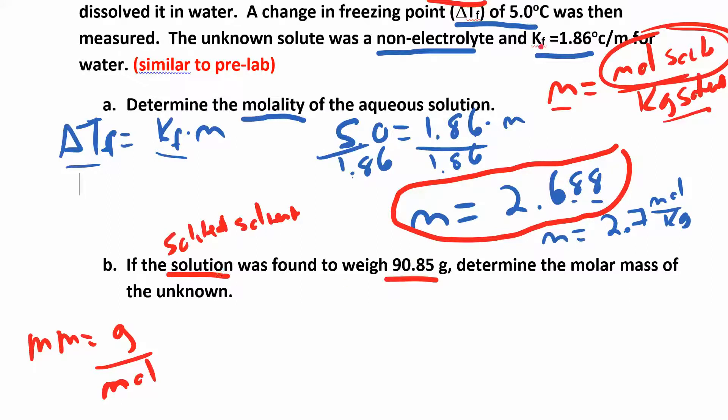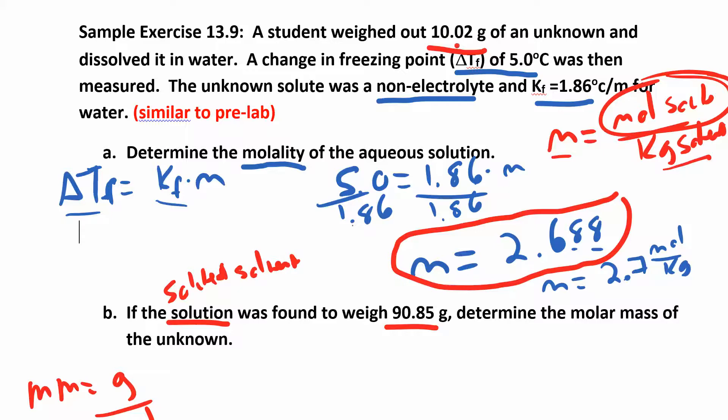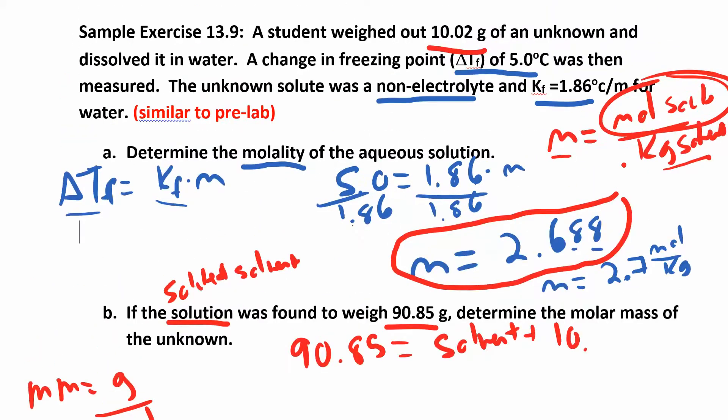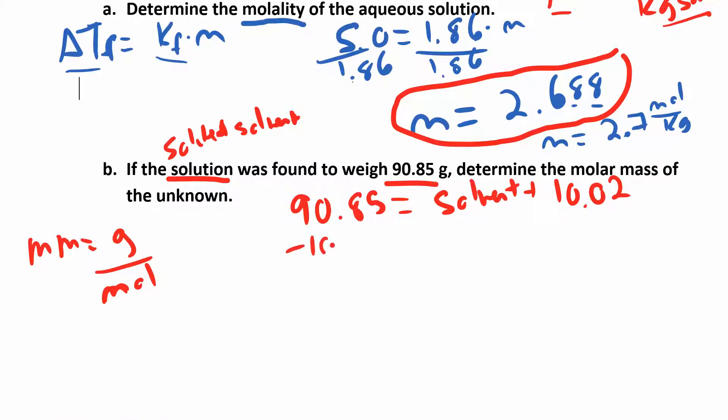All they give me is the mass of the solution and the mass of the solute. So if 90.85 is equal to the solute plus the solvent - the solvent plus the solute - the solute is 10.02 grams. All I have to do is subtract in order to find the mass of the solvent. So minus the 10.02 gives us 80.83, and that's the grams of the solvent. And to convert that to kilograms, I'm just going to divide that by a thousand. So that gets me 0.08083 kilograms.